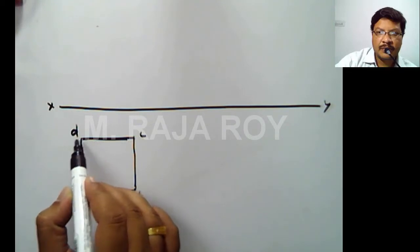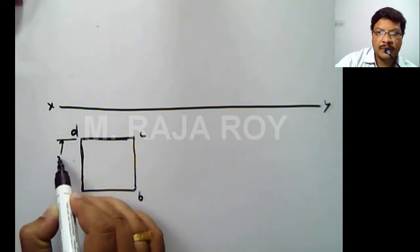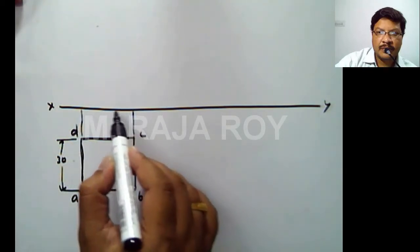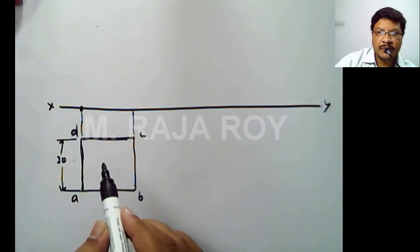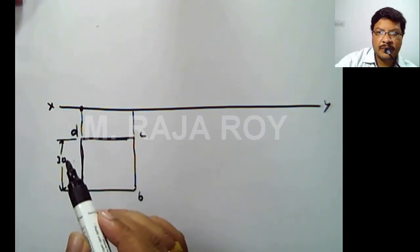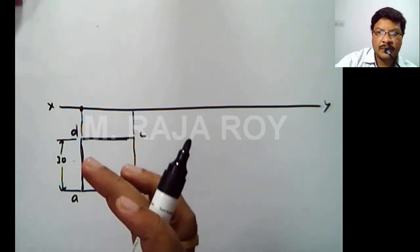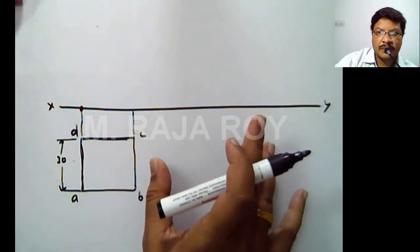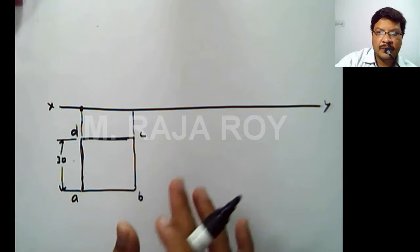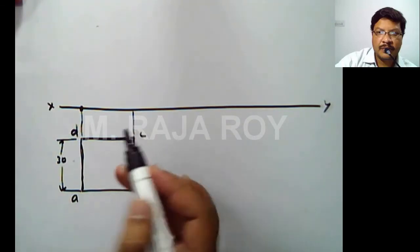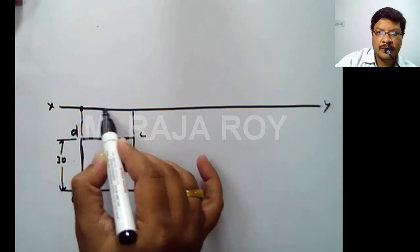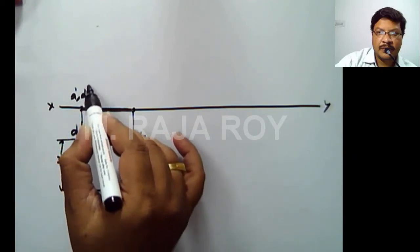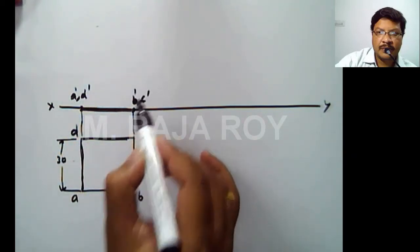From the top view, project the front view. The front view starts from the XY line because one edge of the surface is in the HP — that condition you have to maintain. Keeping that edge in the HP and making the surface parallel means the entire surface will lie on the horizontal plane. When the surface is on the horizontal plane and you are seeing from the front, the total surface will lie on the XY line. You will get the front view — this is A dash, D dash, B dash, and C dash.